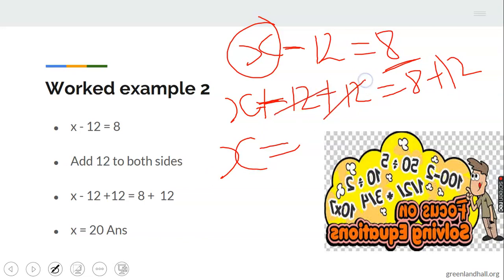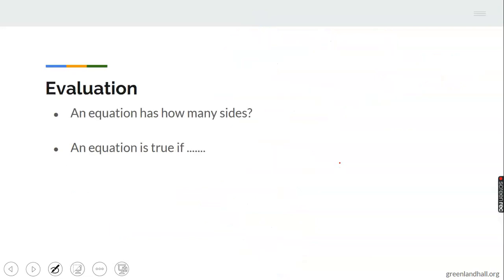Eight plus 12 gives me 20. Should we check? If my x is 20, then 20 minus 12, what would that give me? It will give me 8, so we are correct. You see, this is an algebraic equation.